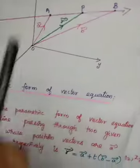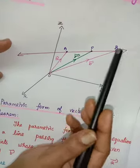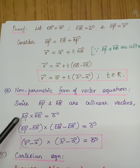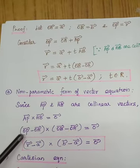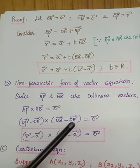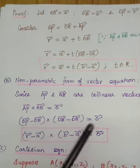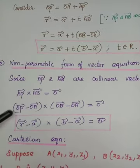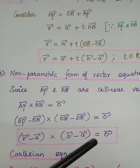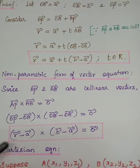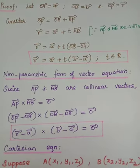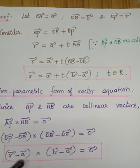For the non-parametric form with two points: AP vector and AB vector are collinear, so their cross product equals zero vector. Writing with position vectors: (OP − OA) × (OB − OA) = 0 vector, which gives (R vector − A vector) × (B vector − A vector) = 0 vector. This is the non-parametric vector equation of the straight line passing through two points with position vectors A and B.